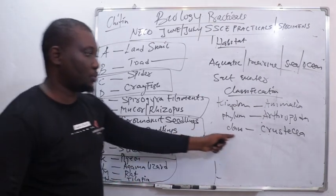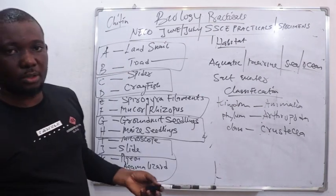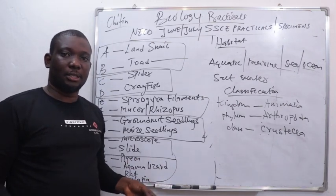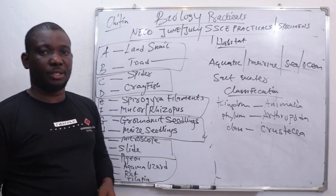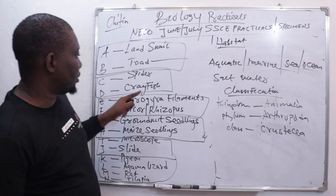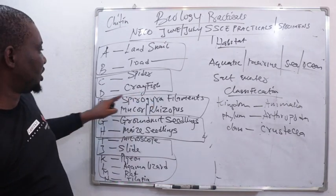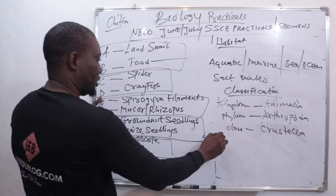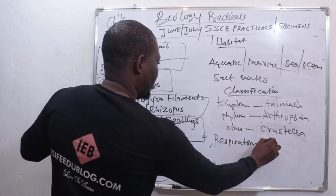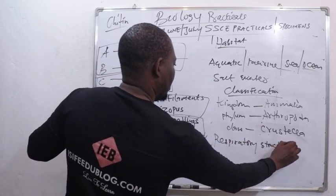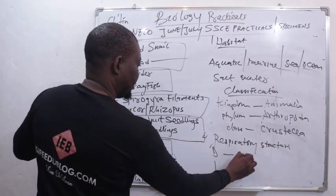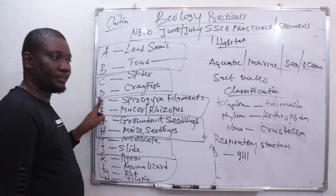Now, looking at this, this class will also help us study their respiratory structure. The respiratory structure of crawfish, or specimen D — given that they are aquatic.